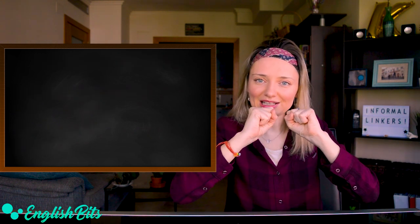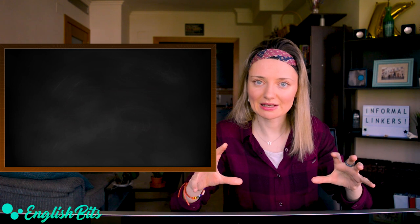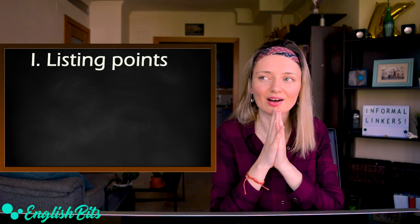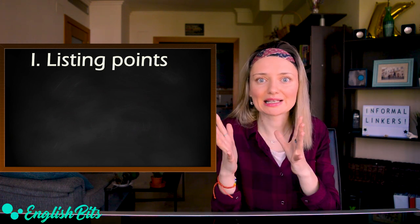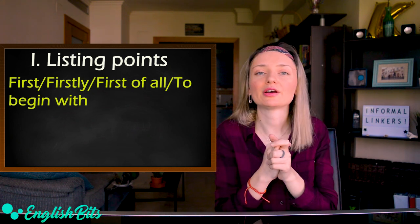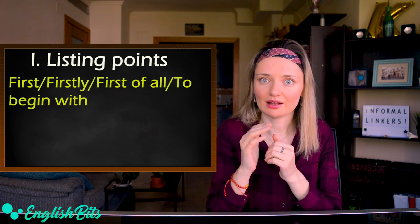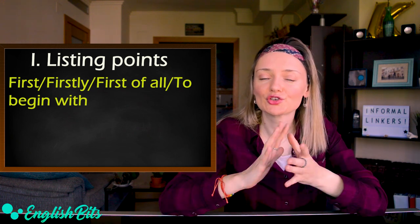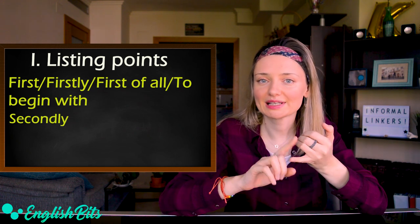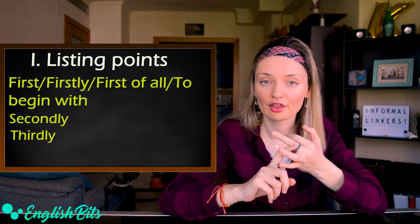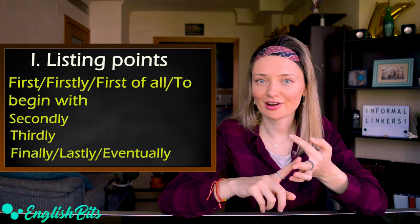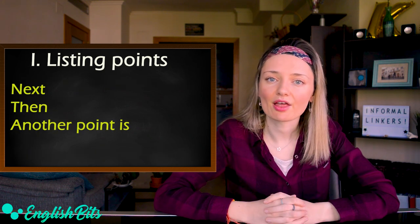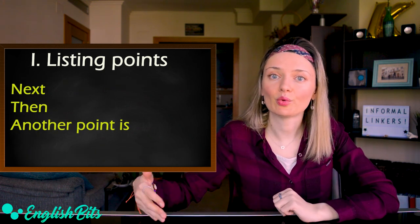I've divided linkers into 12 categories. The first one is listing points. You can start your first or second paragraph with: first, firstly, first of all, or to begin with. To introduce your second point: secondly. The third: thirdly. And your final point: finally, lastly, or eventually. You can also use: next, then, or another point is.